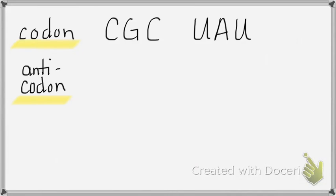Let's practice: I gave you codons — how do you know this is RNA? It's got U's. So I gave you some codons, let's practice getting anticodons. Give me the first anticodon.